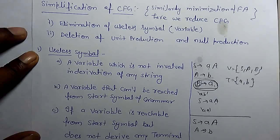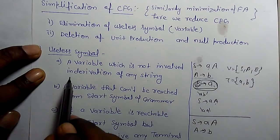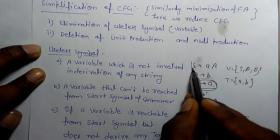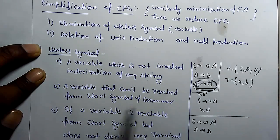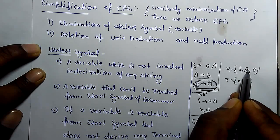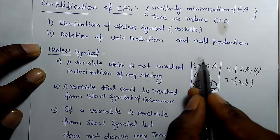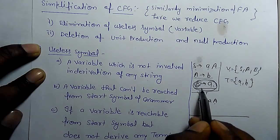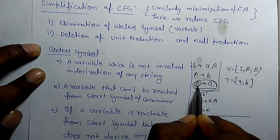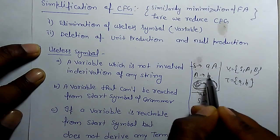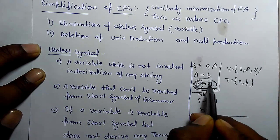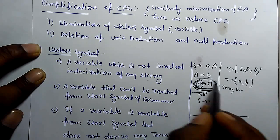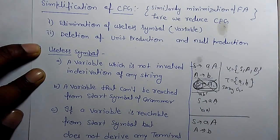The first term is useless symbols. What are useless symbols in a grammar? A variable which is not involved in derivation of any string. For example: S derives aa, A derives b and B derives a. Variables are S, A, B and terminals are small a and small b. Here we can see we can't reach from S to B. S derives aa and A derives small b, but we can't reach B. So B can't be involved in string generation — that's why B is a useless symbol.